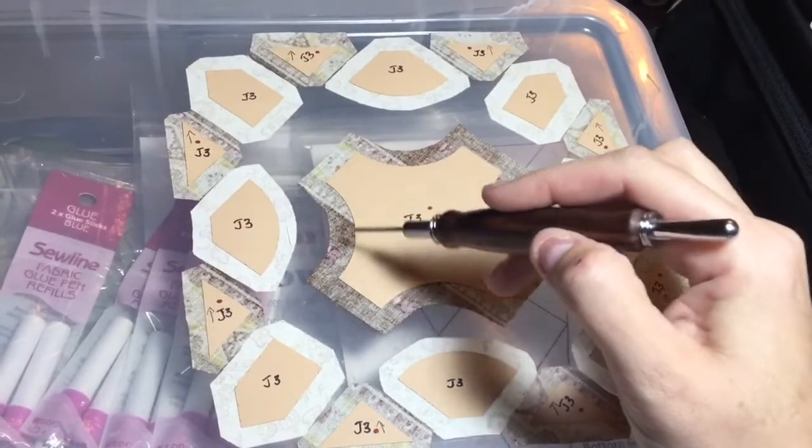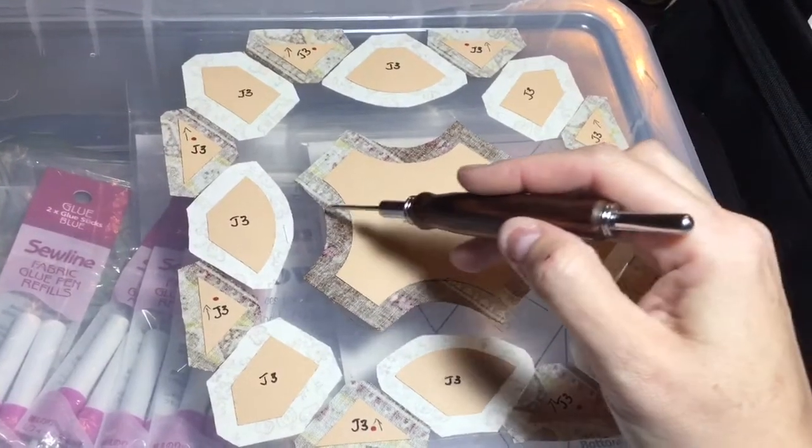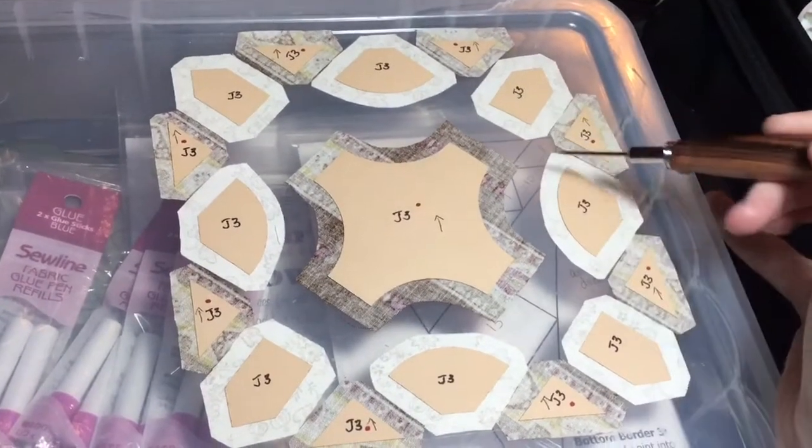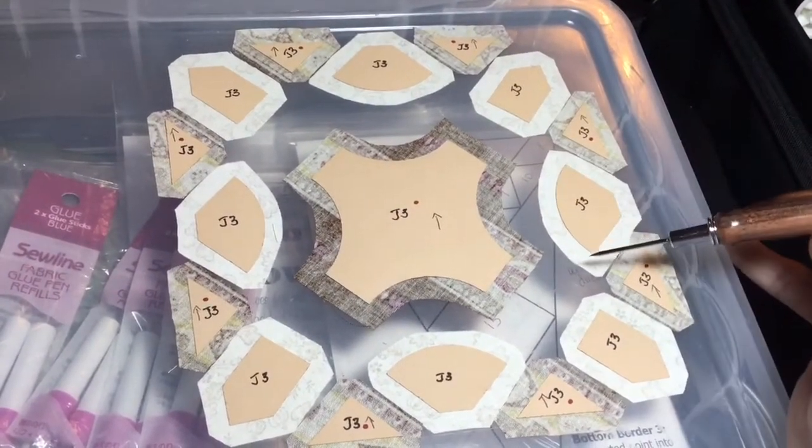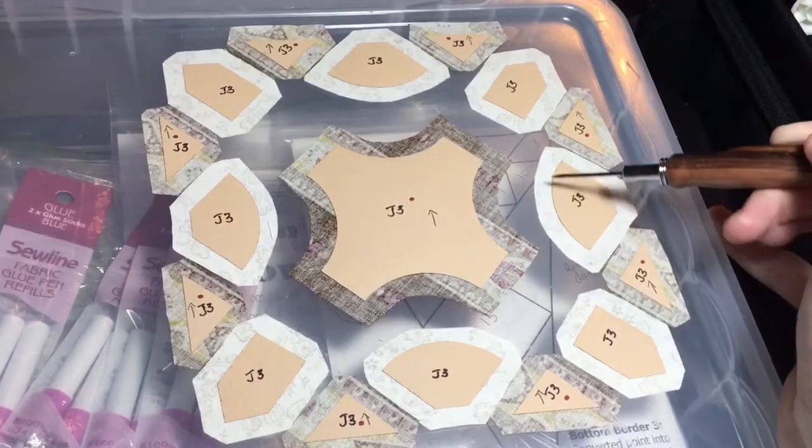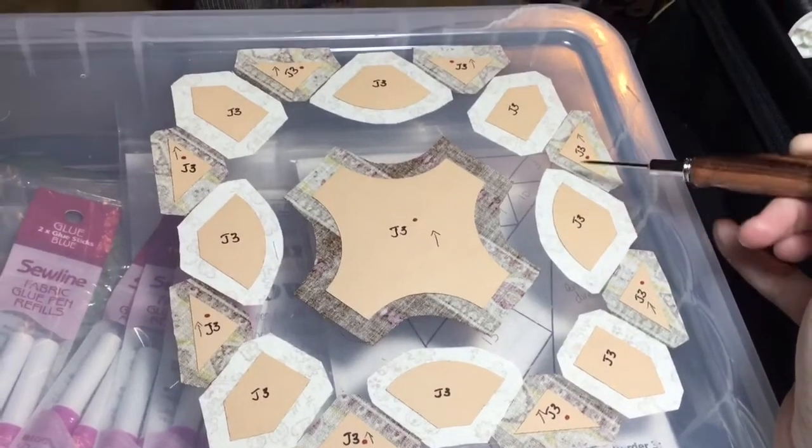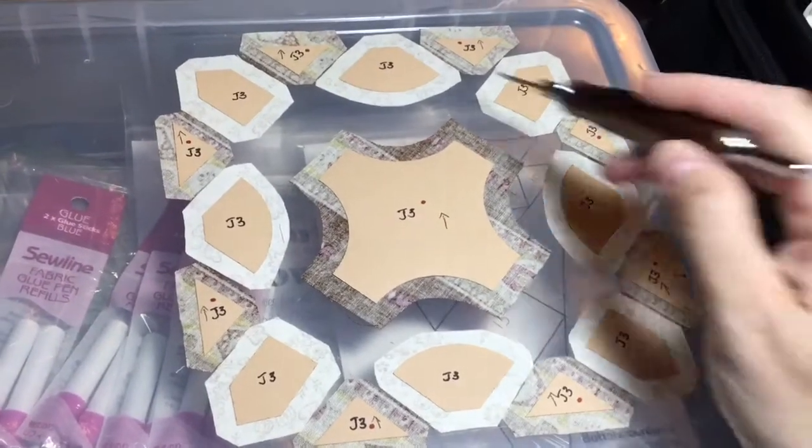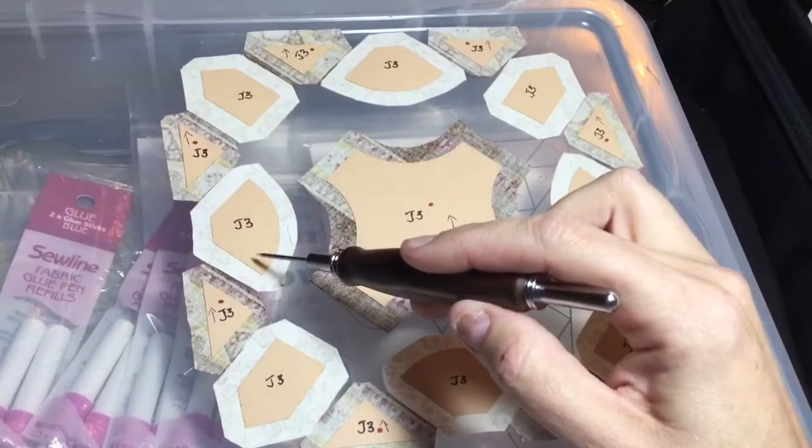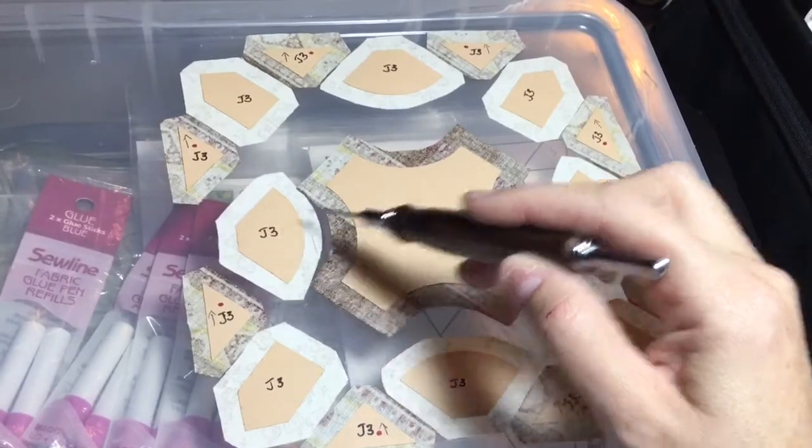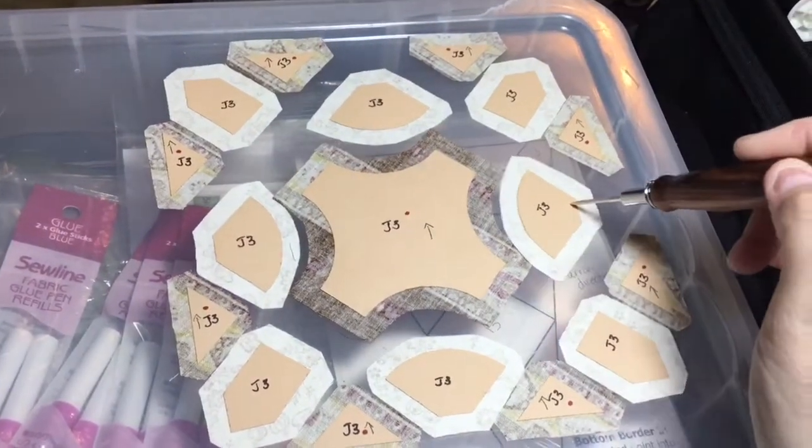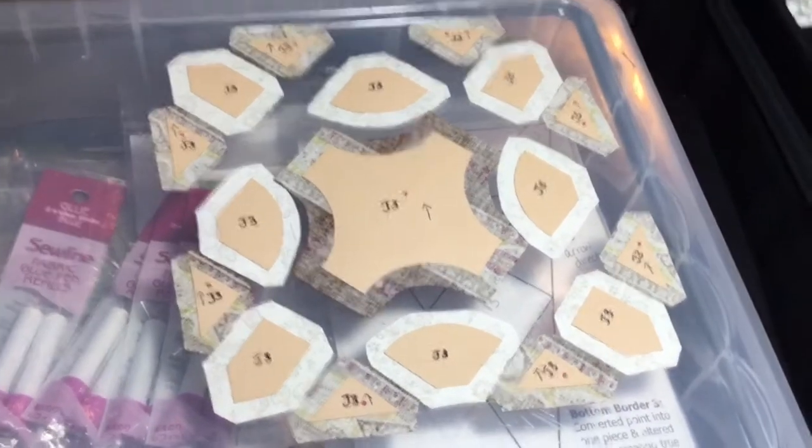First of all, I'm going to baste these inside curves with the notch and glue technique, and then I'm going to baste these outside curves with the gathering stitch method, and then I'm going to baste the rest of these normally. So I'm going to get busy with this, and then I'm going to attach these to this before I do anything else.